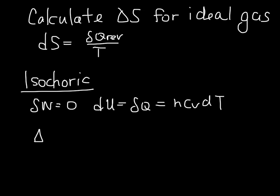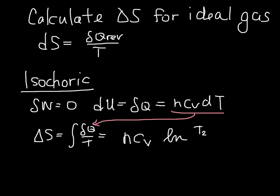So to find delta S, we can just plug right in here. And so we're going to plug this into here. We're going to do this integral, and we're going to find out that delta S is equal to n Cv ln of T2 over T1. So this expression here holds only for an isochoric process.